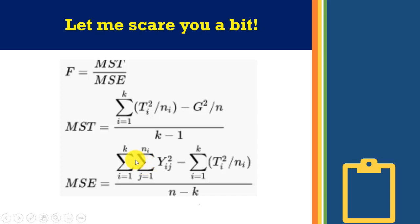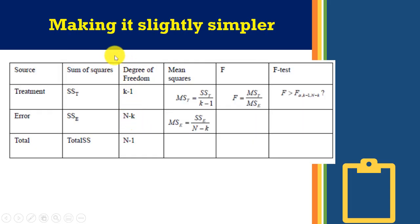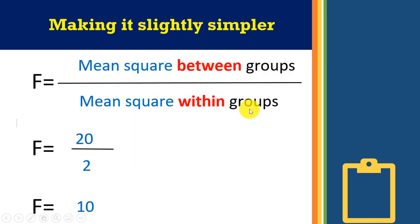Let me simplify the formula. Professors used to put all manner of scary formulas on the board, but when you get your ANOVA result it's just simple division and multiplication. The F is the Mean Square between groups divided by the Mean Square within groups. For example, if the Mean Square between groups is 20 and the Mean Square within groups is 2, then F = 20 ÷ 2 = 10. That's the F-test.